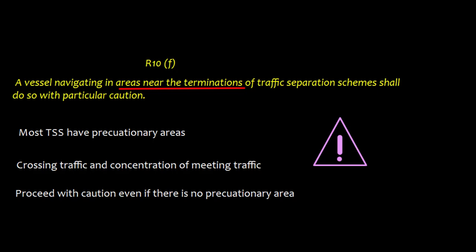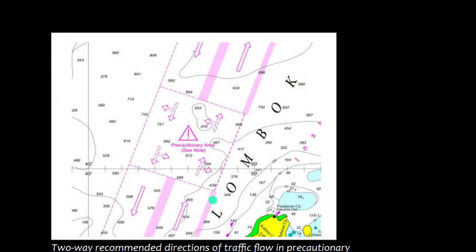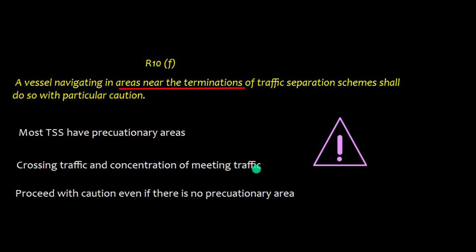Rule 10F concerns precautionary areas. A vessel navigating in or near areas at the termination of a traffic separation scheme shall do so with particular caution. Precautionary areas are usually marked on charts. Even where no such area is marked, navigating with caution is required at both the start and end of a traffic separation scheme.